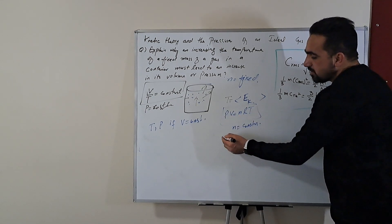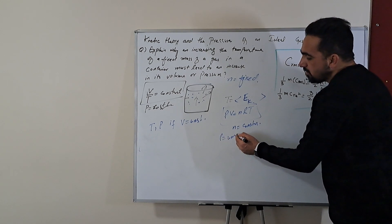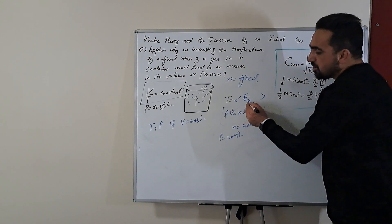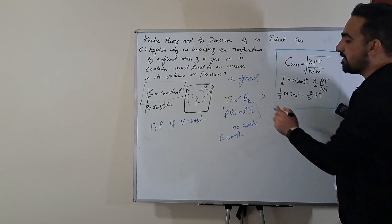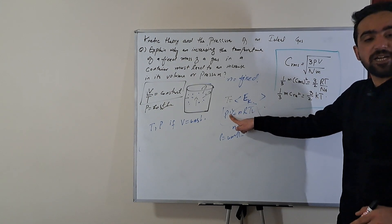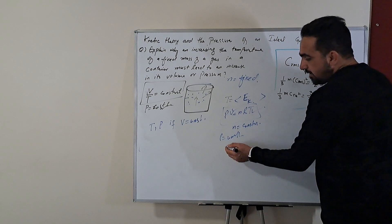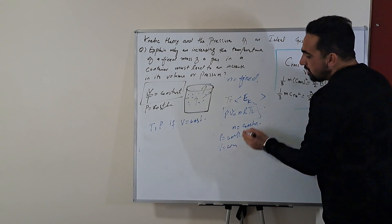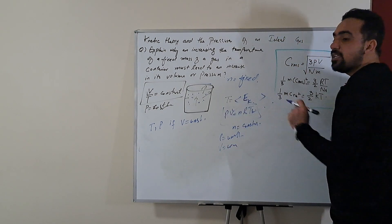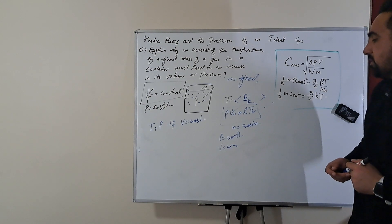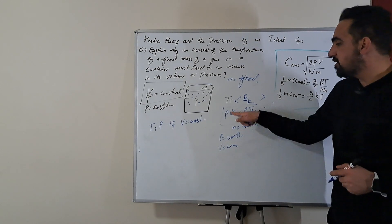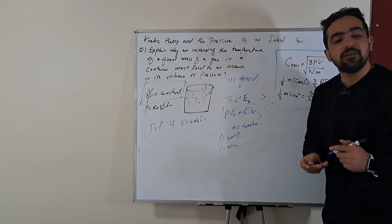So in one case you keep P is equal to constant and change in T will change because R is already constant. So change in T will change volume. Similarly in other case you are keeping V constant, now change in T will lead to change in pressure.